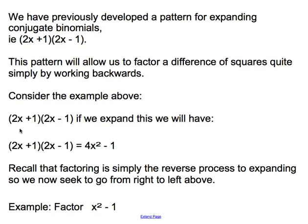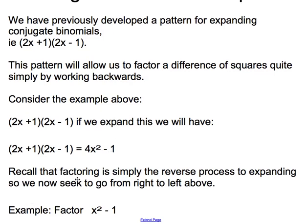Consider the example above. When we expanded these two binomials, we got to this difference of squares. Now, since factoring is simply the reverse process to expanding, we now seek to go from right to left above. So from the difference of squares to the conjugate binomial. So let's see that in the example that I have listed here below.